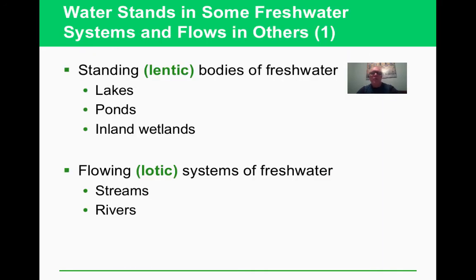Now we get onto freshwater. There are lakes, ponds, and inland bodies — we call those lentic bodies of water, they're standing. Streams and rivers are the lotic — the flowing systems of water.